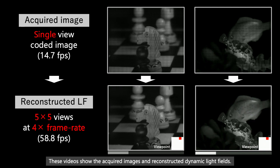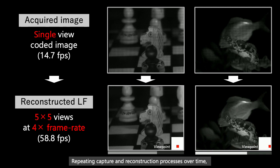Repeating capture and reconstruction processes over time, we can acquire a dynamic light field at 4 times the frame rate of the camera.